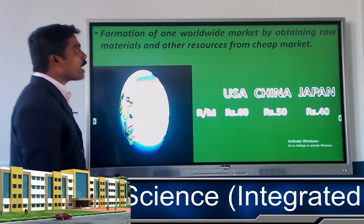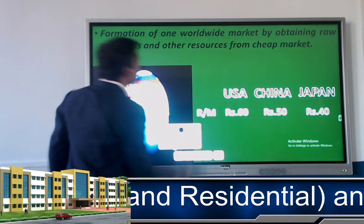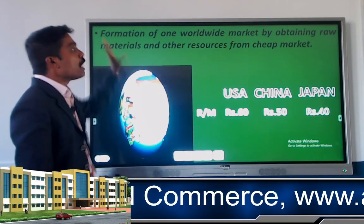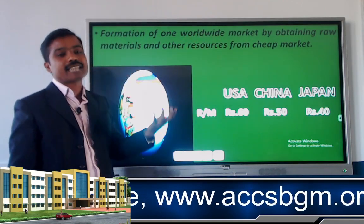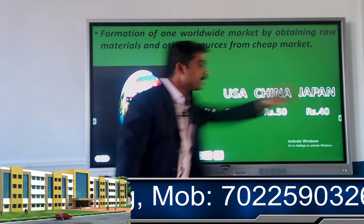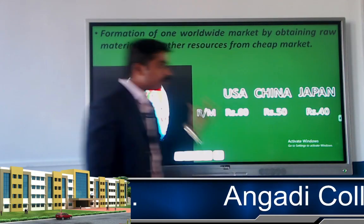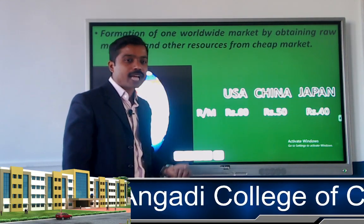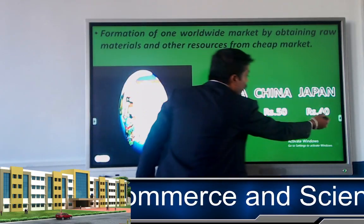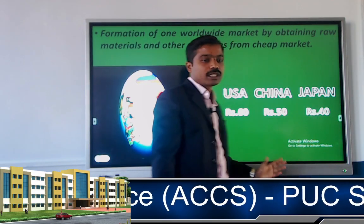The third point is the formation of a worldwide market by sourcing raw material from the cheapest market. Here, the whole world is treated as one market. Wherever raw material is available at a cheaper rate, we source from there. For example, if USA offers raw material at 60, China at 50, and Japan at 40, we take raw material from Japan because it is cheapest.